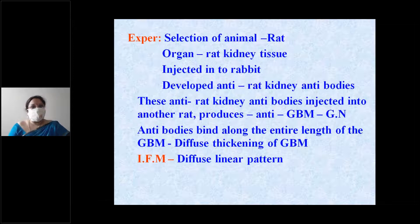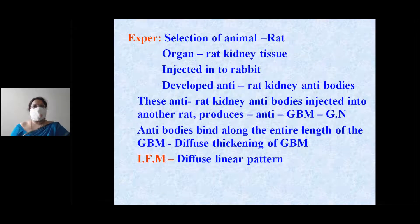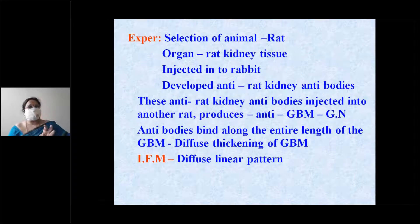Because the antibodies bind along the entire length of the glomeruli, there is diffuse thickening. On immunofluorescence, you appreciate a diffuse linear pattern, because the antibodies are deposited against the entire length of the glomerular basement membrane. This experiment shows the mechanism of glomerular injury in a rat.